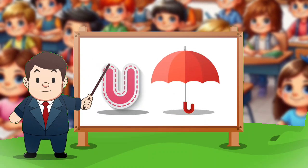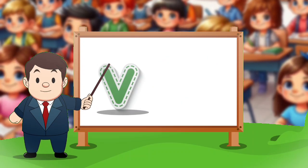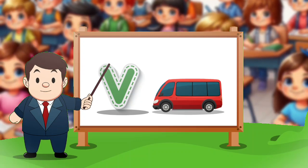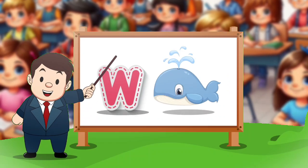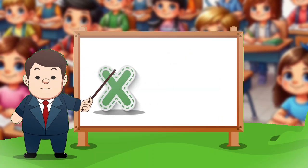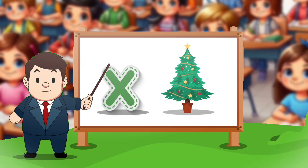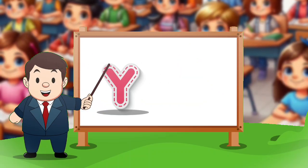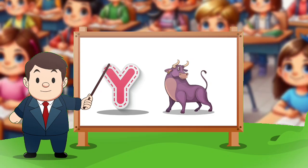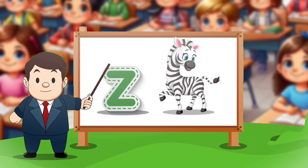U. U for umbrella. V. V for fox. W. W for tongue. X. X for fox. Y. Y for york. Z. Z for zebra.